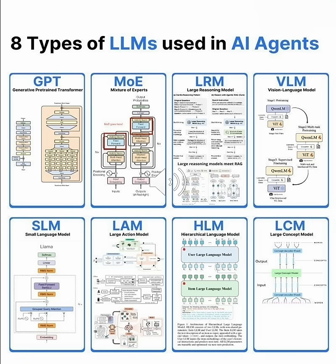HLM, hierarchical language models, use a two-tier system. A user-facing large language model handles interaction, while item large language models process specific domains. This hierarchy enables massive scalability and specialization, making them ideal for complex, multi-domain applications.